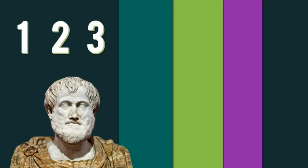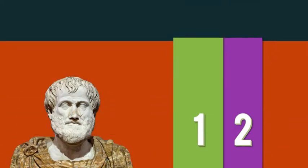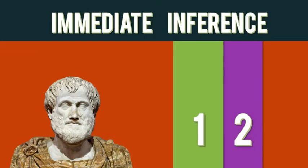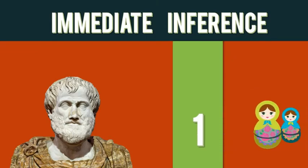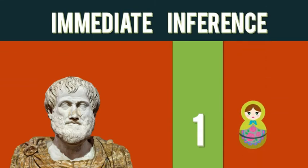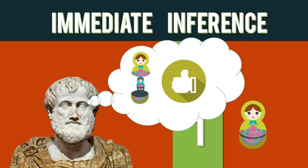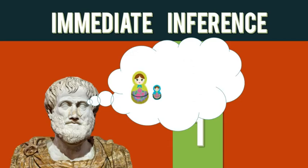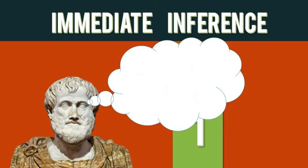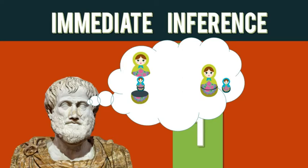Let's see what Aristotle has to say about this, starting with the first two statements. The truth function of these two statements is given to us by what Aristotle would call an immediate inference. When I say the blue doll is inside the green doll, according to Aristotle, you reflect on that statement and understand that it's true — because you simultaneously understand that 'the blue doll is outside the green doll' is false. An immediate inference is when we take one statement and understand it by weighing it against its inverse. Either the blue doll is inside or outside the green doll, but it can't be both.